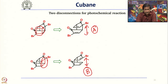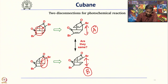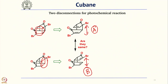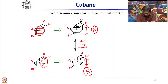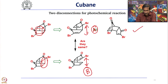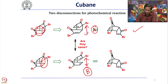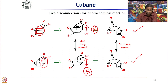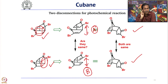The question is: if you call compound A from the front disconnection and compound B from the side disconnection — are A and B the same? If you redraw the structure, you can see both are the same. So it does not matter whether you make the right-hand side four-membered ring or the front four-membered ring using 2+2 cycloaddition — both start from the same compound.